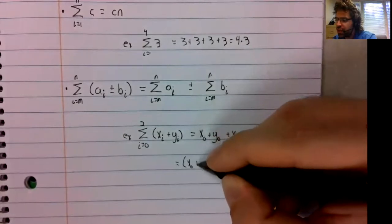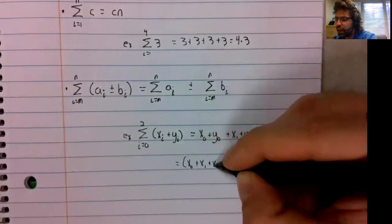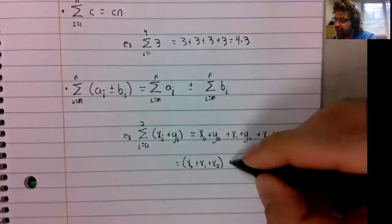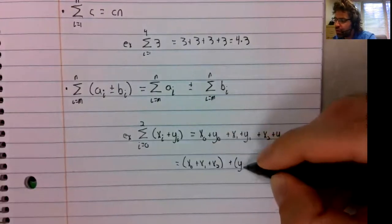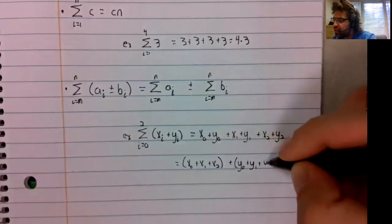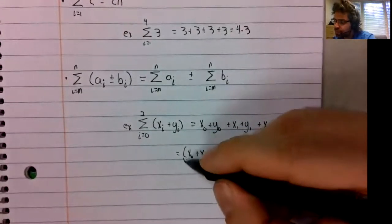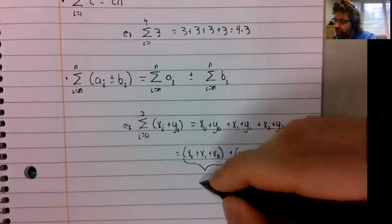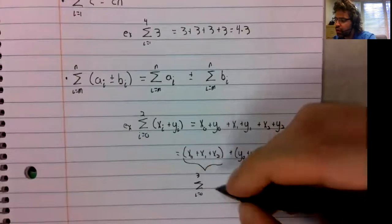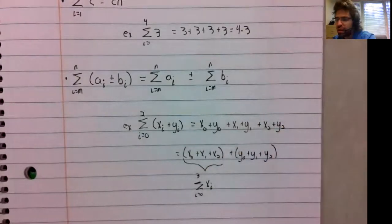Addition can be moved around at will. This is the x's added together, and this is the sum from zero to three of x sub i.